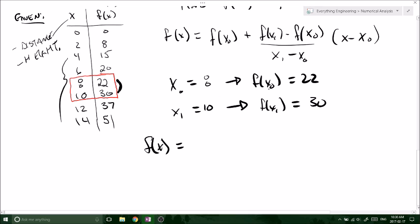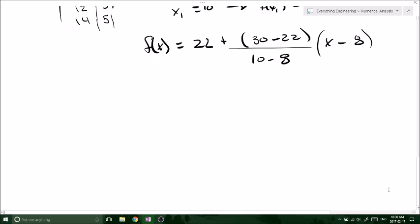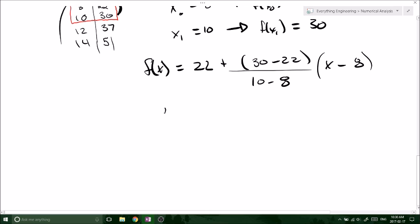f of x equals f of x naught, which we said was 22, plus f of x1 minus f of x naught. So it's 30 minus 22 divided by 10 minus 8, because that's our x1 minus x naught, times x minus 8. Boom. It's that simple. Simplify this, and you're going to get f of x equals 4x minus 10.